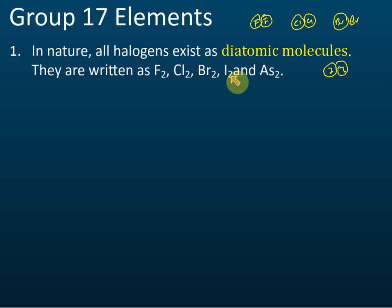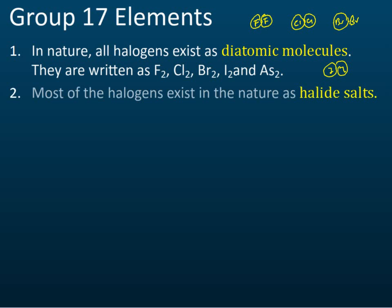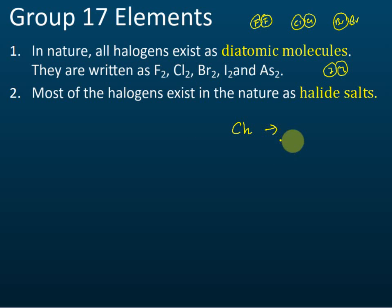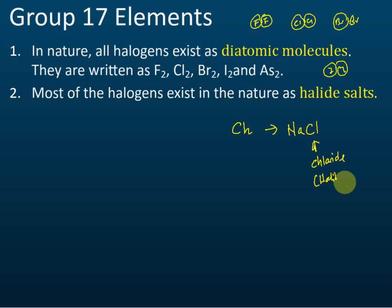The formulas are F₂, Cl₂, Br₂, I₂, and As₂, because they are diatomic molecules — that's why we have the subscript 2. Most halogens exist in nature as halide salts. For example, chlorine reacts with sodium to become sodium chloride — this is chloride, which is one of the halides.